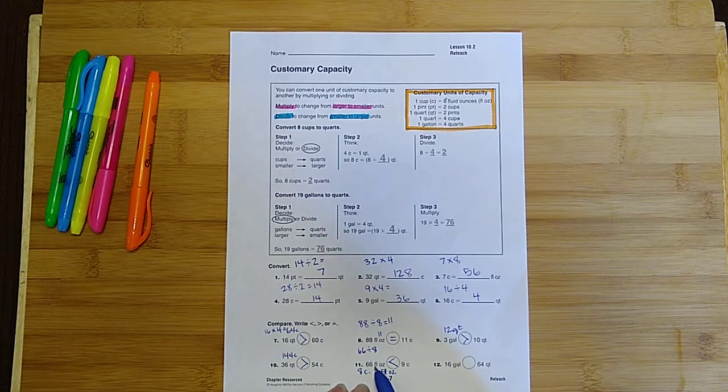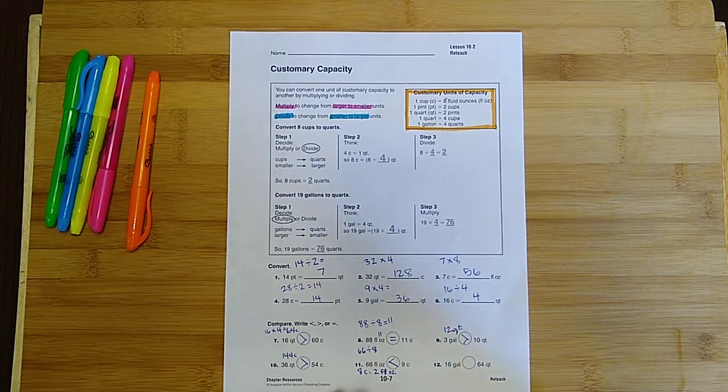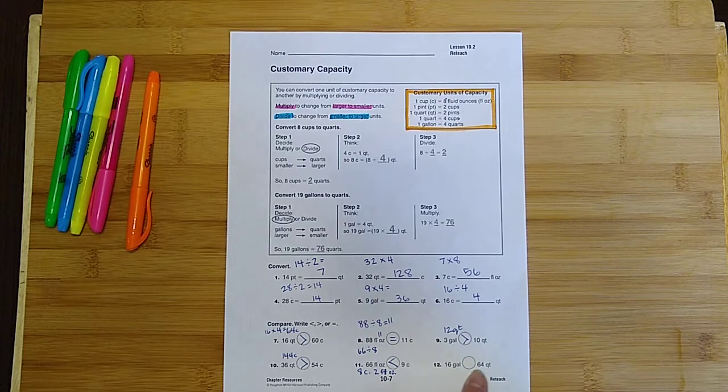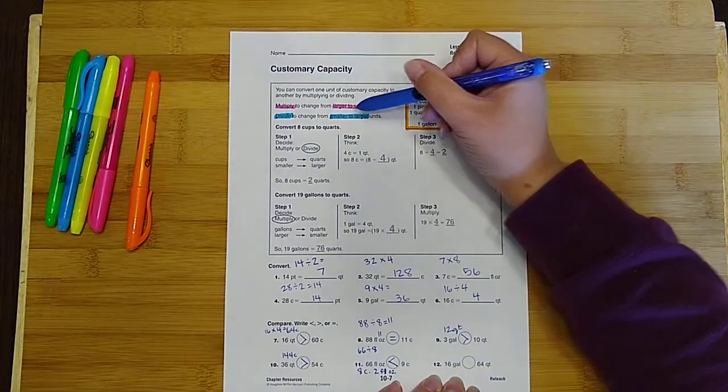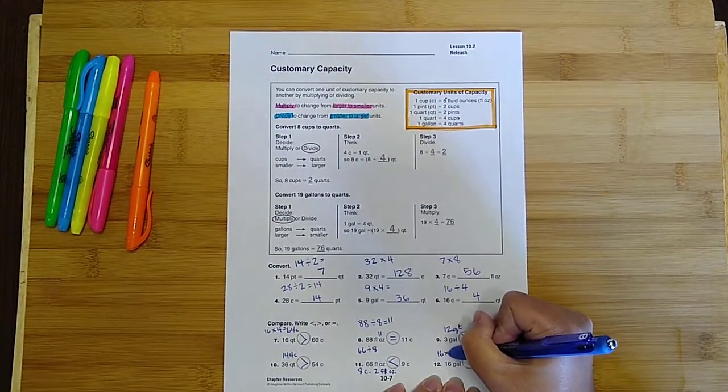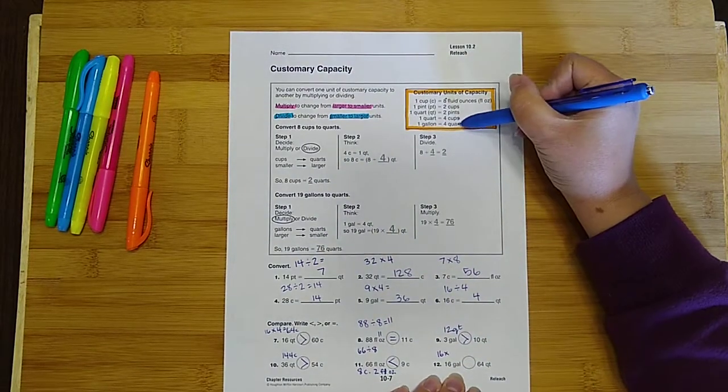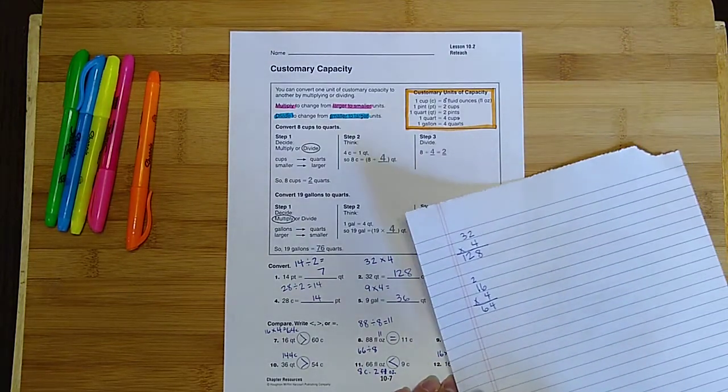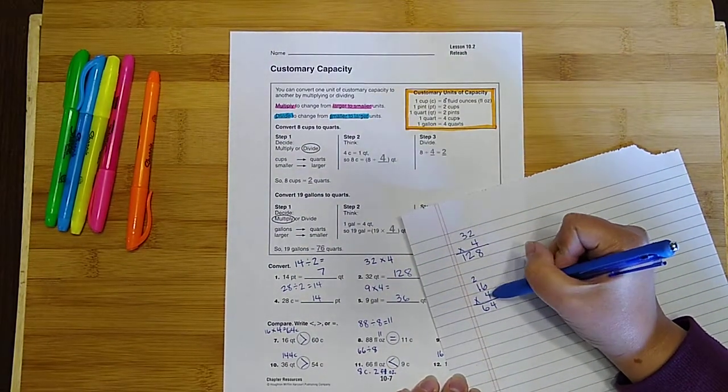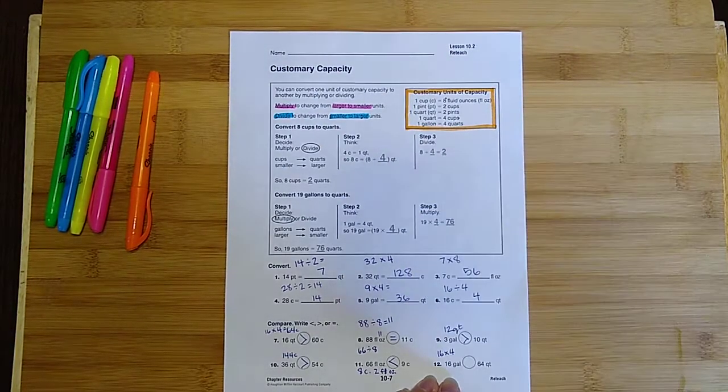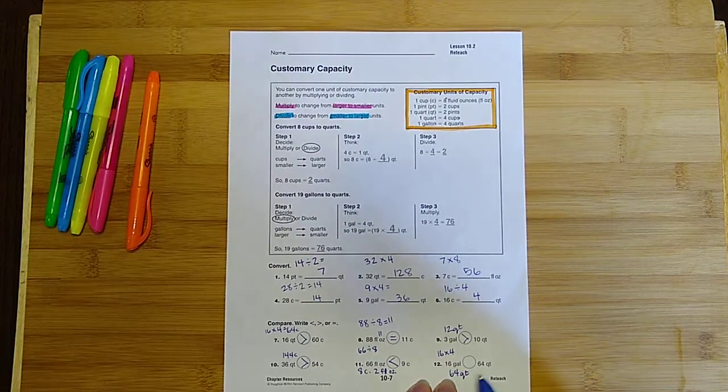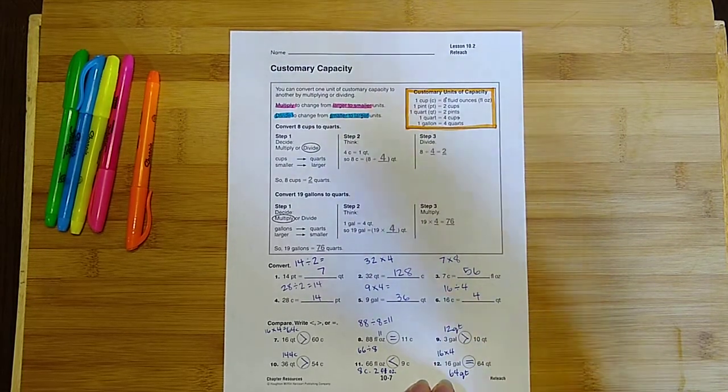Yeah, 66 fluid ounces is less than 9 cups. Okay, here's our last one. 16 gallons. Since we're converting from gallons to quarts, we're going larger to smaller, which means I need to multiply. So 16 times, and there are four quarts in every gallon, so times 4. And you know what, we actually did that problem earlier. Do you still have your scratch paper? 16 times 4? 16 times 4 is 64. So on this side, we have 64 quarts. And look, they're both the same number. We're going to have an equal to right there.